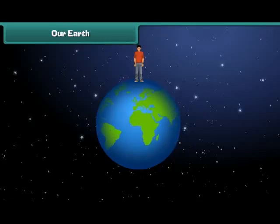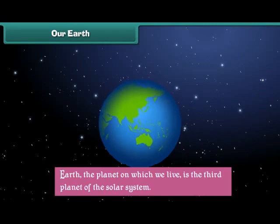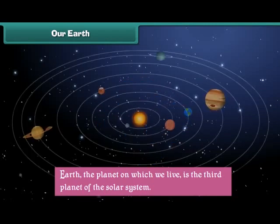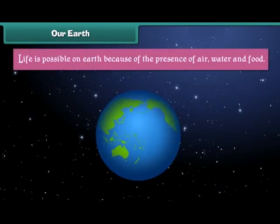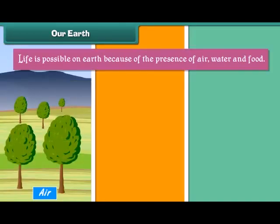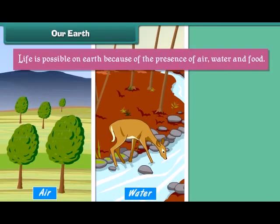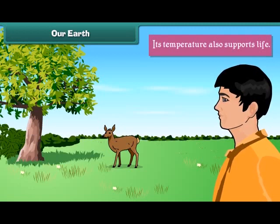Our Earth: Earth, the planet on which we live, is the third planet of the solar system. Life is possible on Earth because of the presence of air, water, and food. Its temperature also supports life.